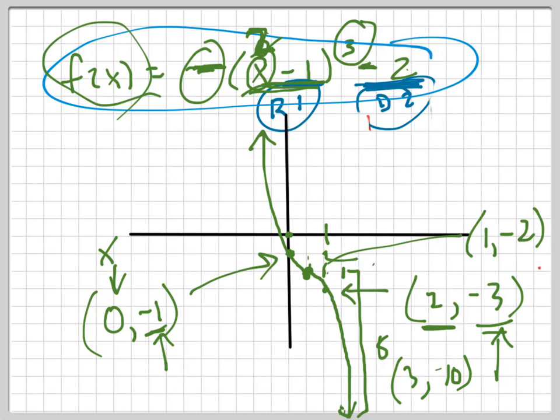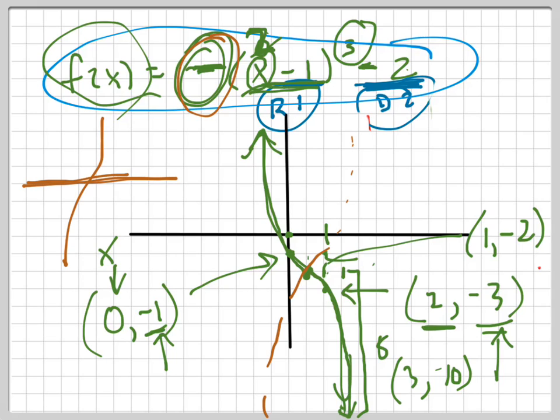And then how do you know that it goes this way instead of that way? You know because of the negative there. You know it flips, it goes this way, instead of this way. Instead of this way because of the negative. The negative flips it. It flips it vertically. So, it took this, and it did this to it. That's how you know.